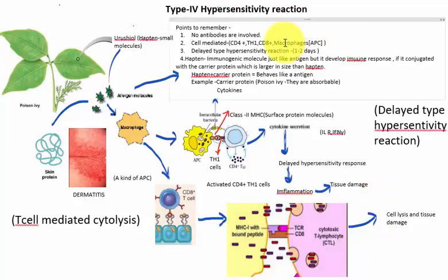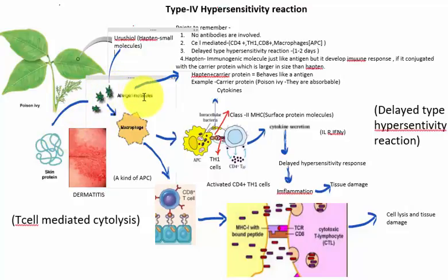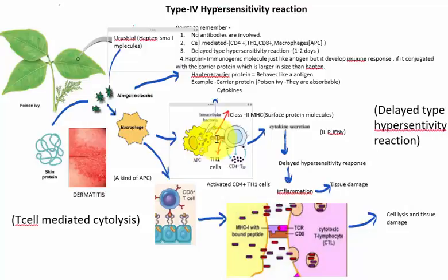To summarize type 4 hypersensitivity reaction: no antibodies are involved — only cells such as CD4+, T helper cells, CD8+, and macrophages. It is called delayed type hypersensitivity reaction because it takes one or two days to develop the immune response. The hapten is an immunogenic molecule just like an antigen, but it is activated only when conjugated with a carrier protein. In the case of poison ivy, urushiol acts as a hapten and attaches to the skin protein to form an allergen. Macrophages engulf the antigen, present it via class II MHC proteins, and the T helper cell with CD4+ glycoprotein attaches to the class II MHC protein, releasing cytokines that result in delayed hypersensitivity reaction and tissue damage.